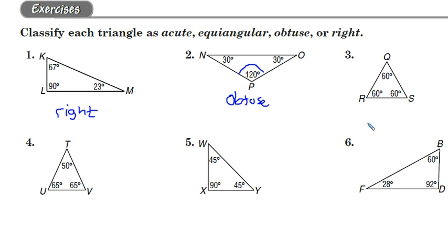Okay, number three we can classify a couple of ways. It is acute because all the angles are less than 90. But also, notice all the angles are the same, so we can call it equiangular.